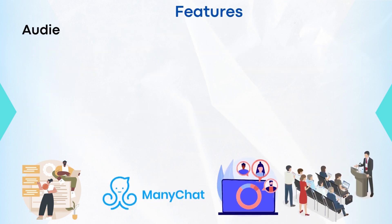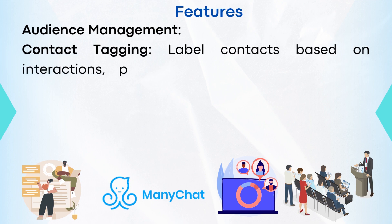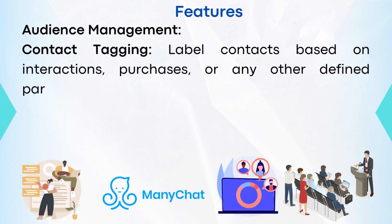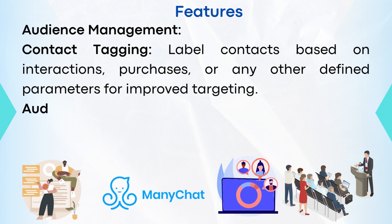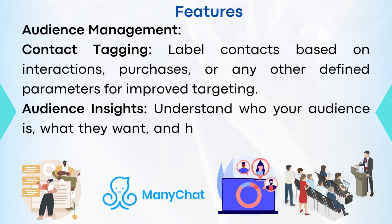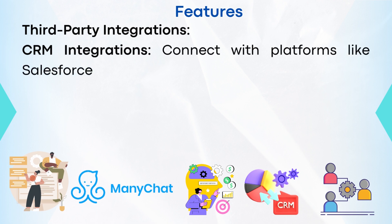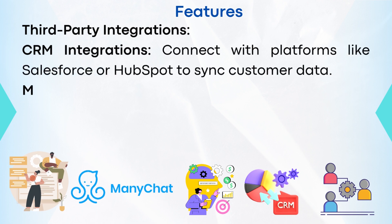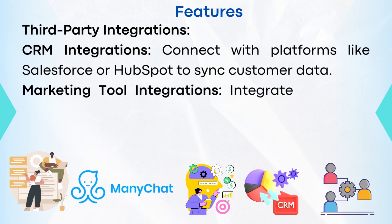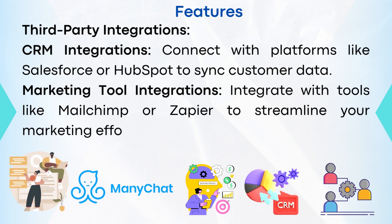Number six: audience management. Contact tagging labels contacts based on interactions, purchases, or any other defined parameters for improved targeting. Audience insights help you understand who your audience is, what they want, and how they interact with your bot. Number seven: third-party integrations. CRM integration connects with platforms like Salesforce or HubSpot to sync customer data. Marketing tool integrations connect with tools like MailChimp or Zapier to streamline your marketing efforts.